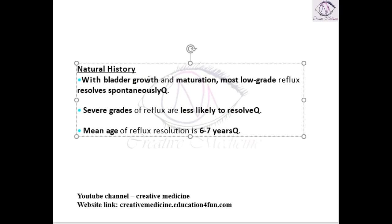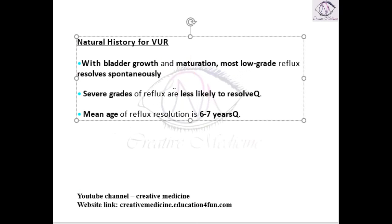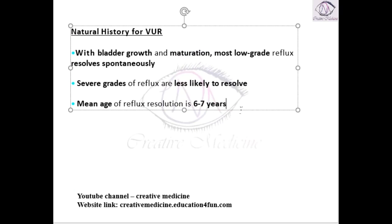In the natural history of vesicoureteric reflux, in the beginning the bladder grows, and during bladder growth and during micturition, a low grade reflux if present will resolve spontaneously. If the reflux is low grade, it resolves spontaneously, but if the reflux is in severe grade, it is difficult to resolve. The mean age of resolution — if the reflux is low grade — most of the reflexes will resolve within 6 years of age.